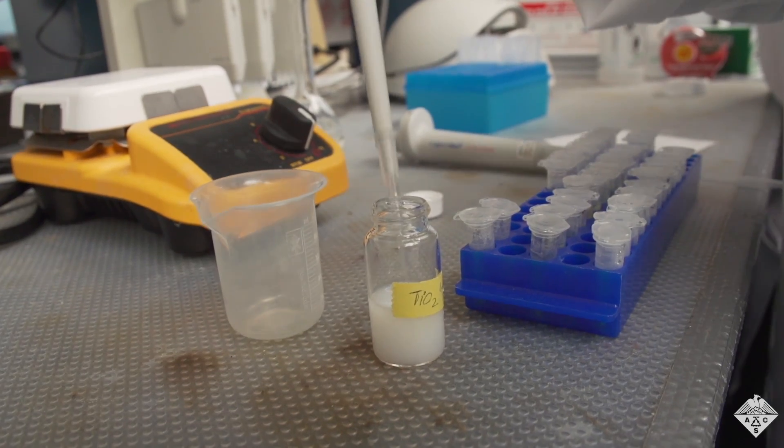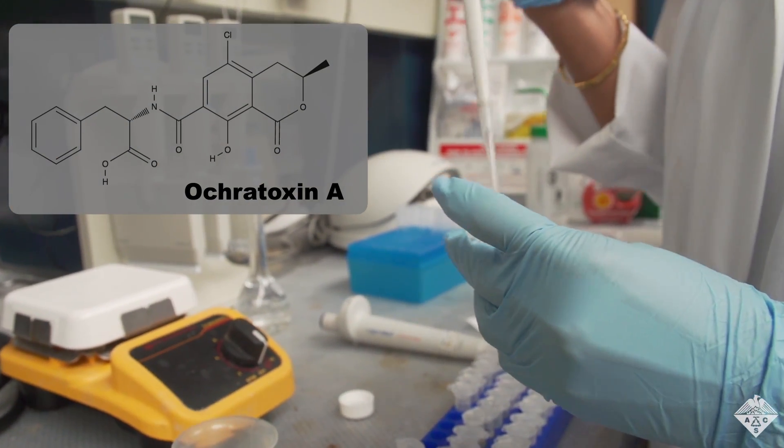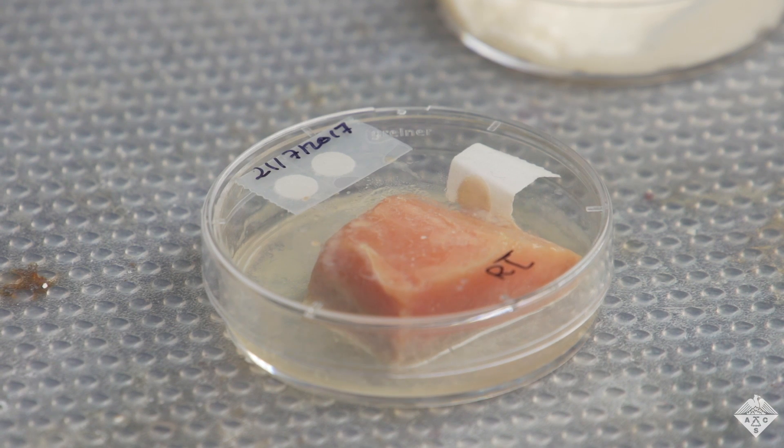One sensor prototype can spot Ocratoxin A, a fungal toxin commonly found in a range of products including cereals and coffee. Later generations of the sensor could be developed to detect Salmonella and E. coli.